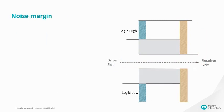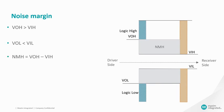The following conditions must be satisfied to interface two devices with different logic levels: VOH of the transmitter must be greater than VIH of the receiver, and VOL of the transmitter must be lower than VIL of the receiver. Noise margin NMH is the difference between VOH and VIH. Noise margin NML is the difference between VIL and VOL. NML and NMH values should be positive to guarantee that the receiver will interpret logic levels produced by the transmitter correctly.